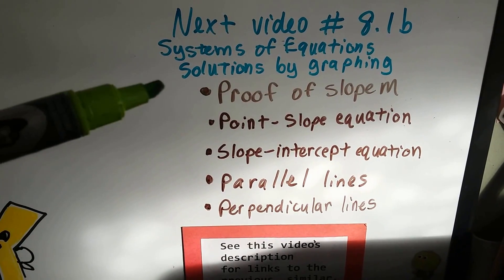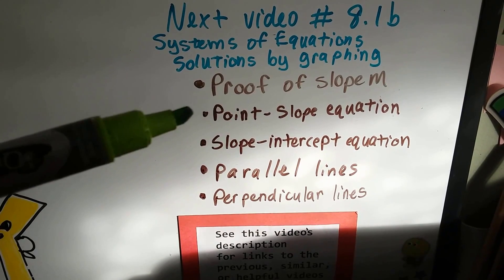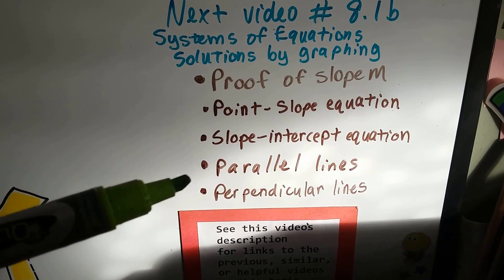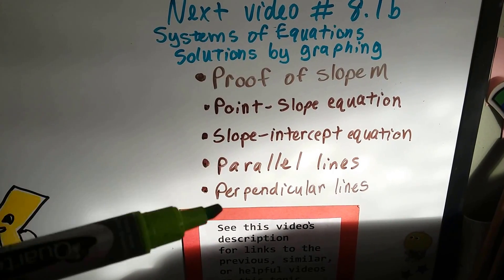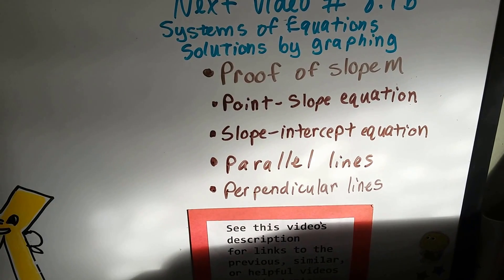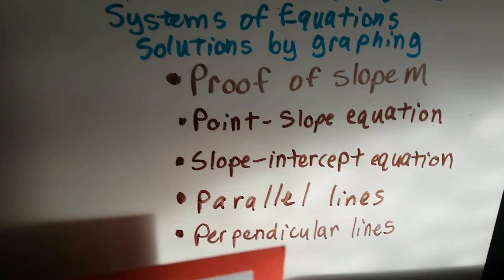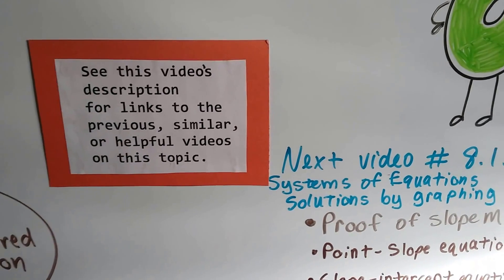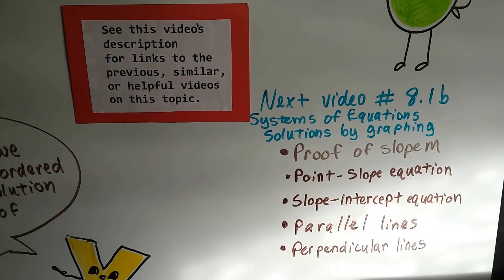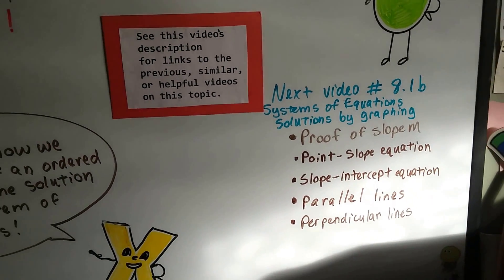And if you want to go back and learn about the proof of slope m, or point-slope equations, or slope-intercept equations, or parallel lines and perpendicular lines that are graphed, then you can go into this description. Let me get it out of the shadow. You can go into this description, and there will be links to these helpful videos. Okay? So you can just click on them.